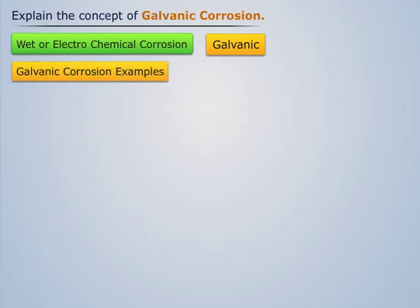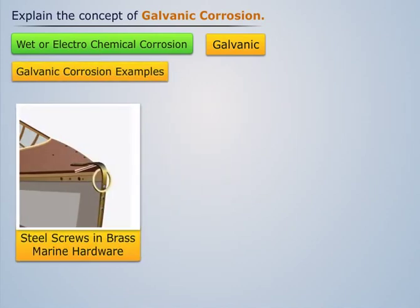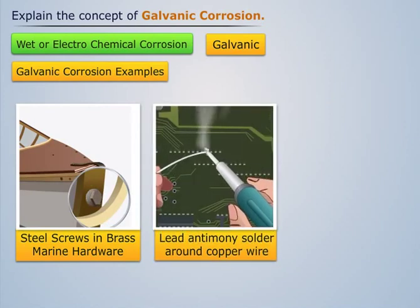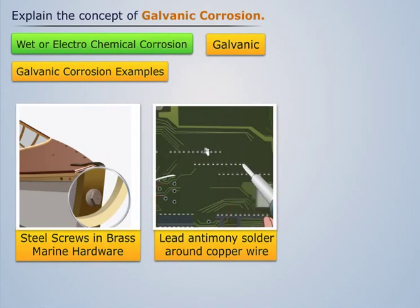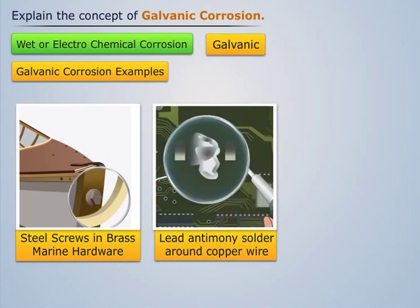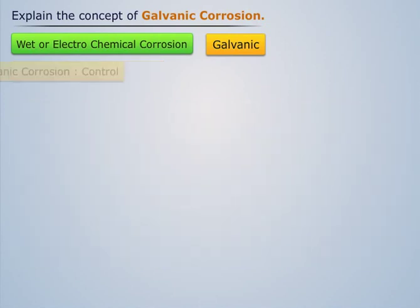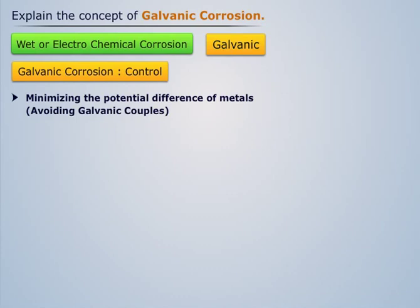Some common examples of galvanic corrosion are steel screws in brass marine hardware, lead-antimony solder around copper wire, and steel pipe connected to copper plumbing. Galvanic corrosion can be controlled by minimizing the potential difference of metals or by avoiding galvanic couples.